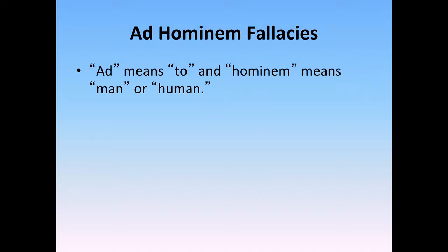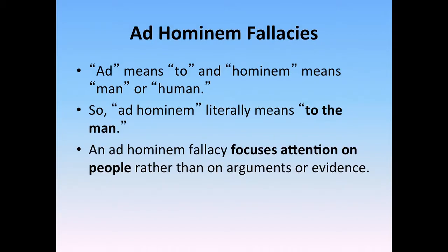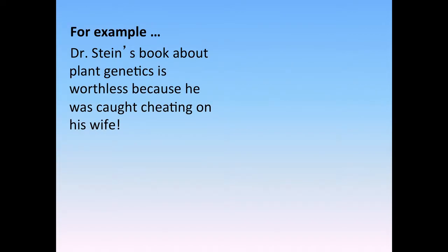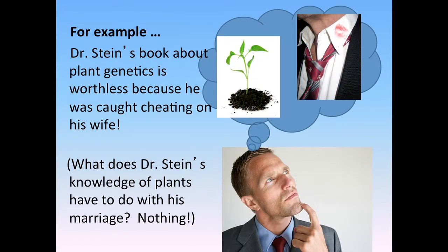So ad means 'to,' hominem means 'man or human,' and this fallacy literally means 'to the man.' An ad hominem fallacy focuses attention on the person rather than on arguments or evidence. This is a fallacy because we expect an argument to be based on evidence, not the people involved in the argument. For example, if an argument states that Dr. Stein's book about plant genetics is worthless because he was caught cheating on his wife — that is an ad hominem fallacy. What does Dr. Stein's knowledge of plants have to do with his marriage? Absolutely nothing.